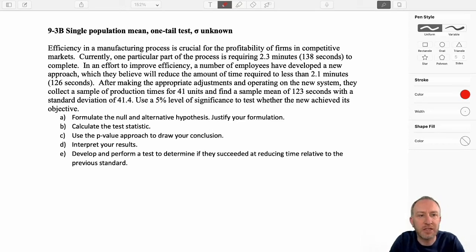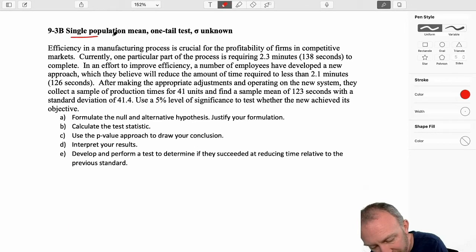Hello everybody and welcome back. This is our second exercise now working with the t-distribution. So once again, single population mean, we're still doing a one-tailed test, sigma is unknown.